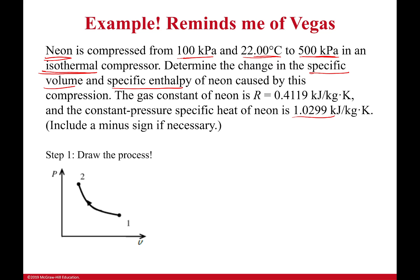Now we have a process diagram. We need to find the volume in both states because that's what we're trying to figure out, the change in specific volume. So we can do that. We can use our ideal gas law because neon acts as an ideal gas. We have a specific gas constant. We're given a temperature. It's isothermal that doesn't change. And we have a pressure. So it seems like it's pretty much a plug and chug scenario.